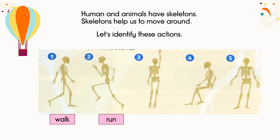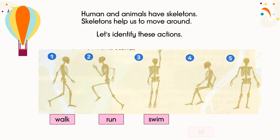Number three — you can see the back of the head, and the hand is like it is in water. And what action is in water? Very good. It is swimming. Number four — what action is the skeleton doing? Yes, it is sitting. Sit. And number five — what is the skeleton doing? Very good. It is standing. Stand.